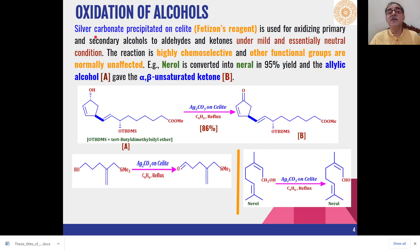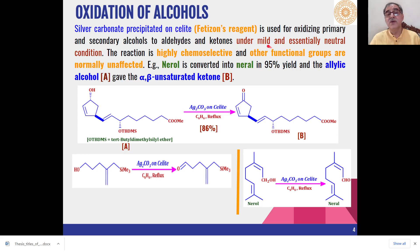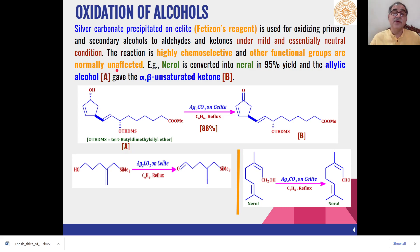Similarly, another reagent — silver carbonate precipitated on Celite, known as Fetizone's reagent — is also very effective for oxidation of primary and secondary alcohols to aldehydes and ketones. Here, even milder conditions are used compared to silver carbonate, and the oxidation is effective even under neutral conditions. This reaction is also highly chemoselective, and other functional groups present are normally not affected by the oxidizing agent.